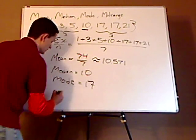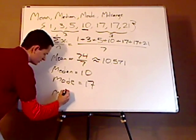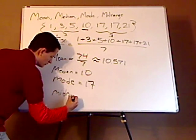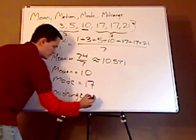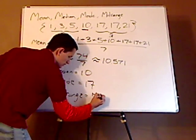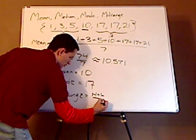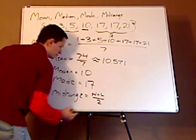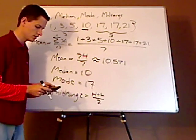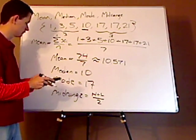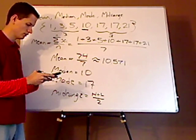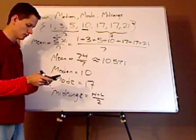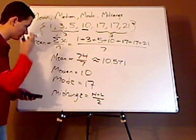Now, mid-range. Again, you're going to rarely see this, depending on what statistics you're taking. But mid-range is just simply high plus low divided by 2. And so you just do that. 1 plus 21 is 22 divided by 2 equals 11.